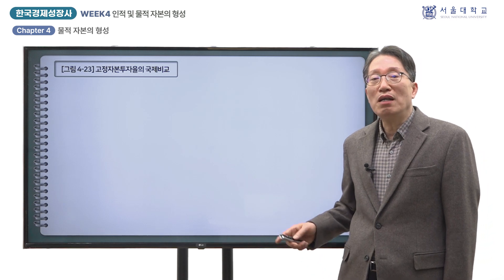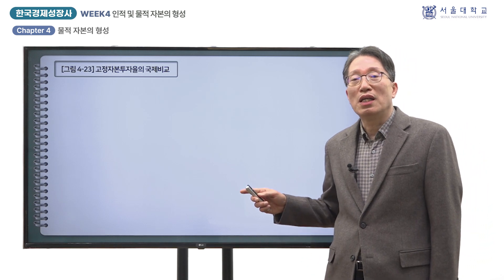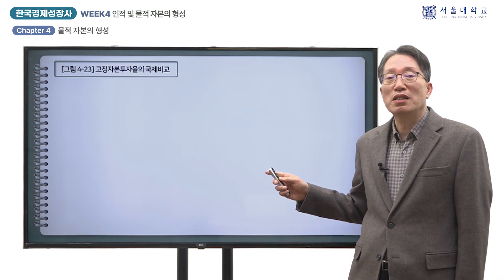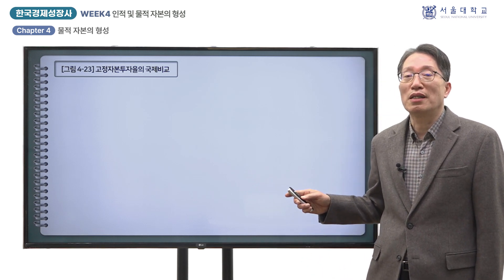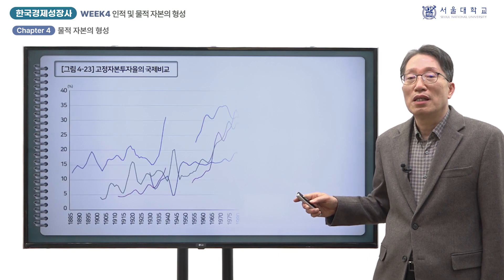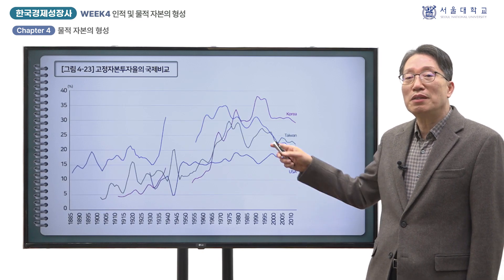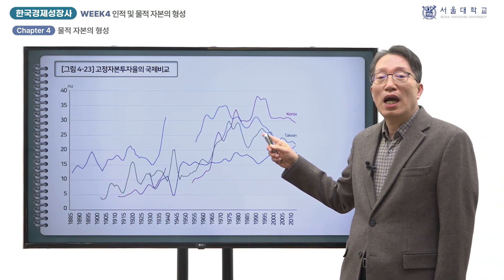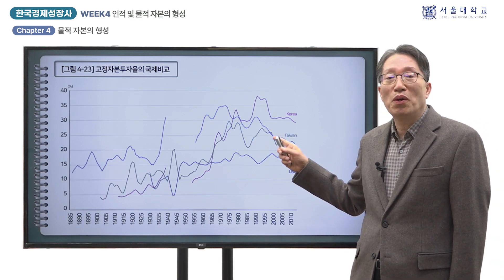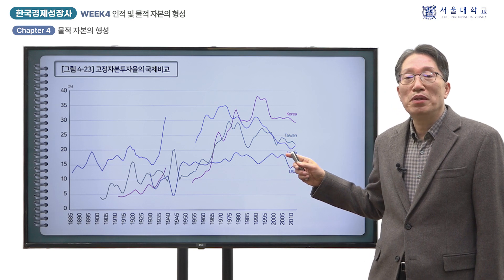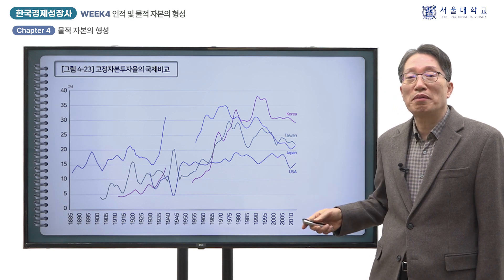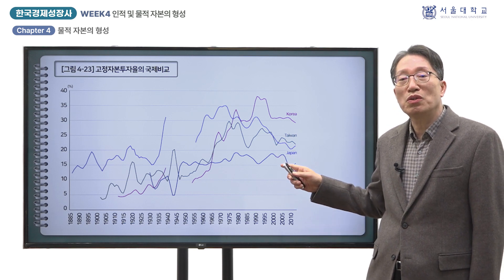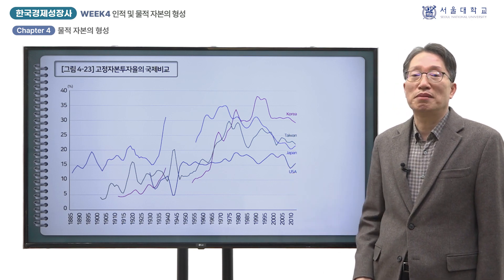한국의 투자율을 다른 나라와 비교해 보면 어떤 특징을 보였을까요? 그림 4-23에는 한국과 함께 일본, 대만, 미국의 고정자본 투자율을 3년 이동 평균값으로 제시하였습니다.